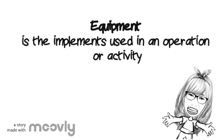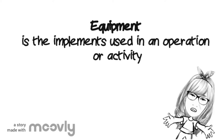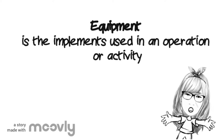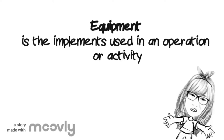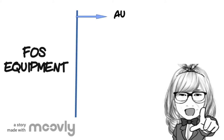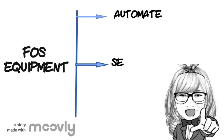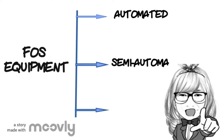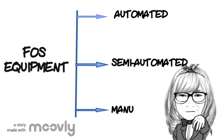The equipment in the front office pertains to the implements used in the operation or activity. Front office equipment is mainly classified into three segments.